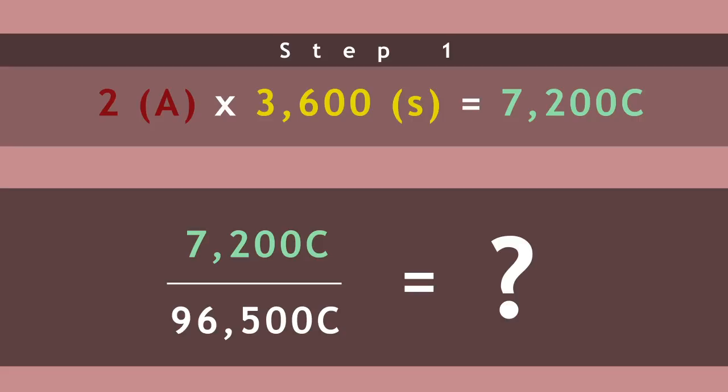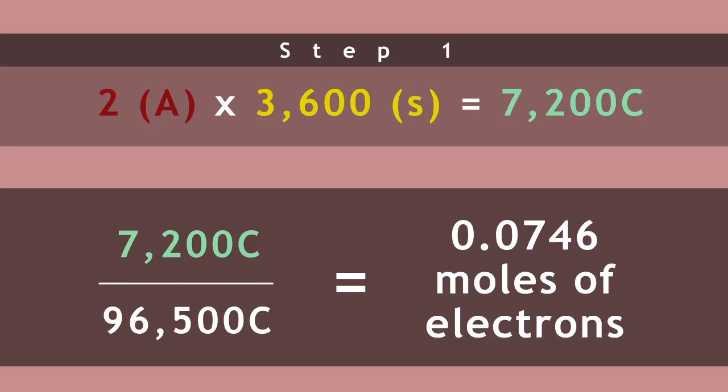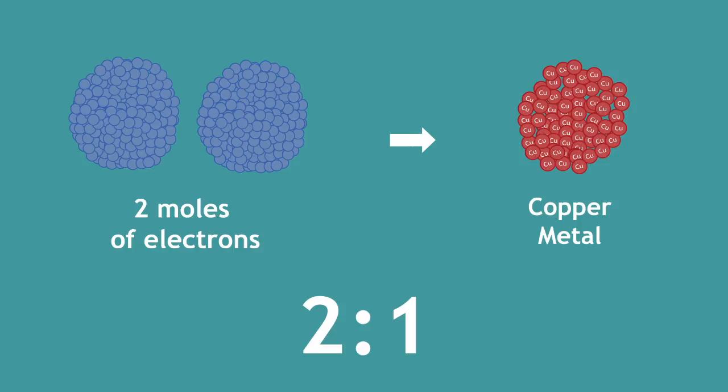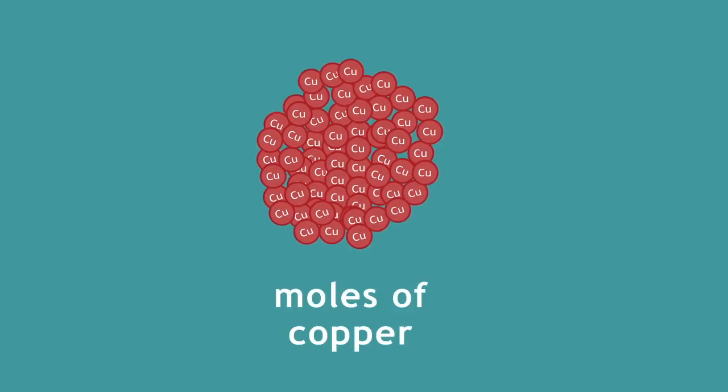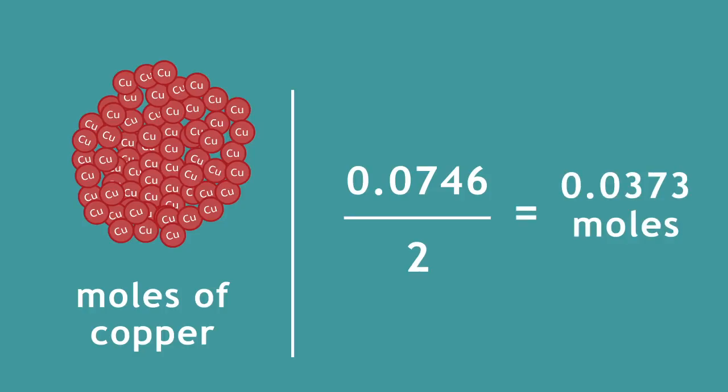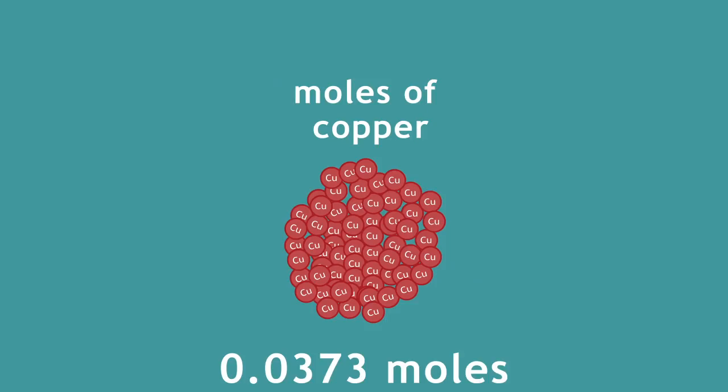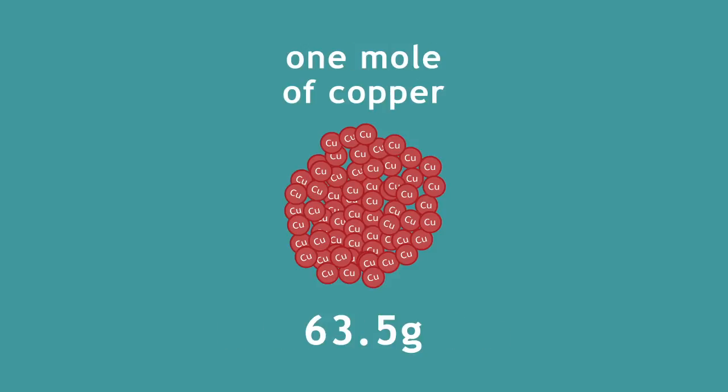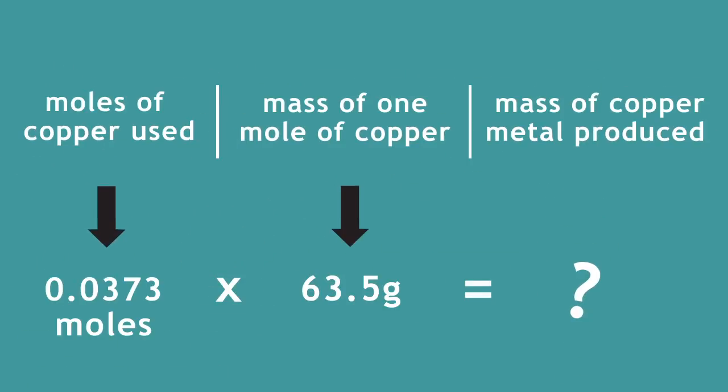You should have got 0.0746 moles of electrons. Remember though, there is a ratio of 2 to 1 electrons transferred to moles of copper metal produced in the reaction. So, to find the actual moles of copper, you have to divide 0.0746 by 2, which is 0.037 moles. Now we know how many moles of copper we have used, and that 1 mole of copper has a mass of 63.5 grams, you can obtain the mass of copper produced. Try it now. Pause and then resume the video to check your answer.